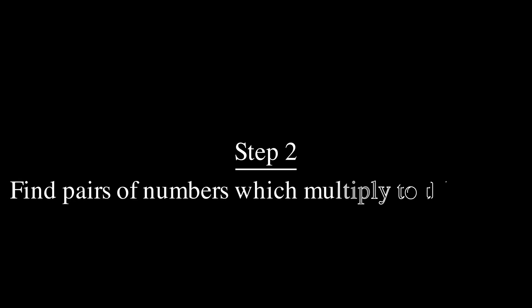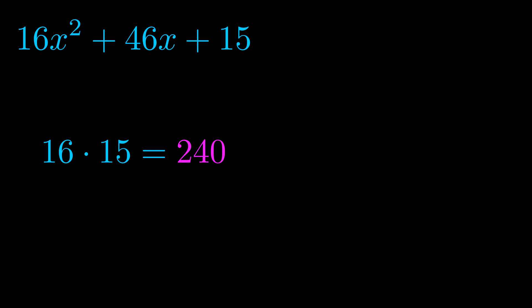Step two is to try to find all of the pairs which multiply to this number. Now it turns out you don't really need to find all of them, but go ahead and write down as many numbers as you can that multiply to the magenta value for now. Pause the video and resume when you're ready to continue. Okay, here's what I came up with.